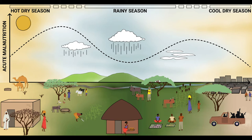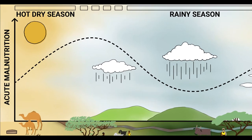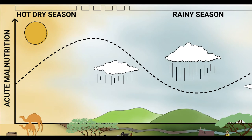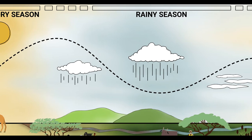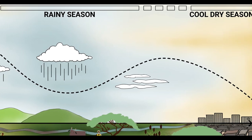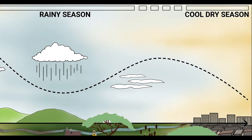These findings challenge the widely held assumption that peak malnutrition coincides with the hunger gap. In this figure, the first peak in wasting occurs at the end of the hot dry season and the beginning of the rains, while a second smaller peak occurs at the end of the rainy season.